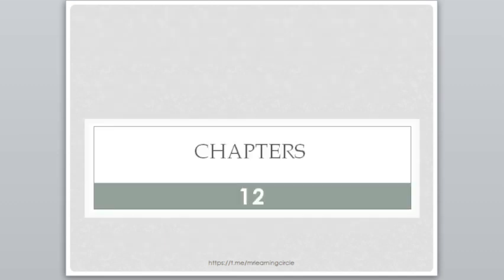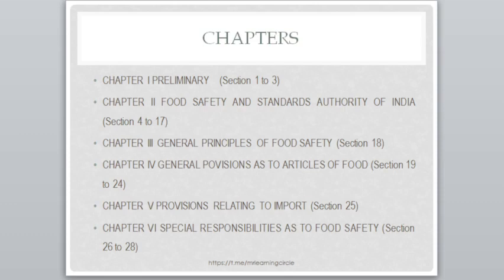Now let's come to the chapters. Today we will complete the chapters, and in the next video we will learn about the sections. There are 12 chapters — let's read one by one what each chapter covers. Chapter 1 is Preliminary, covering Sections 1 to 3. Chapter 2 is related to Food Safety and Standard Authority of India, covering Sections 4 to 17.